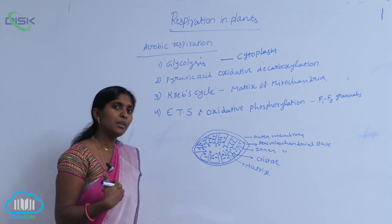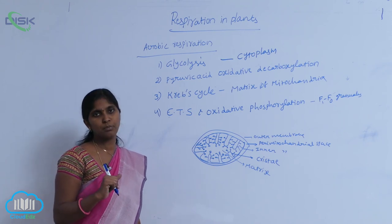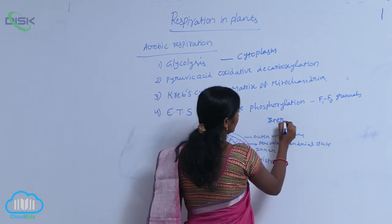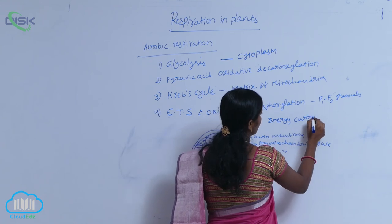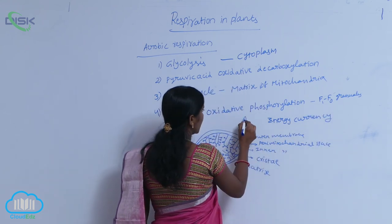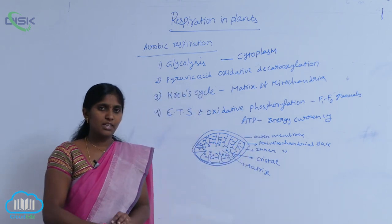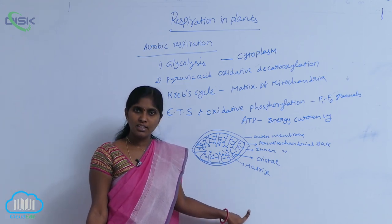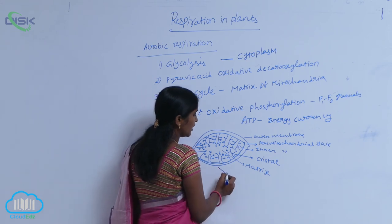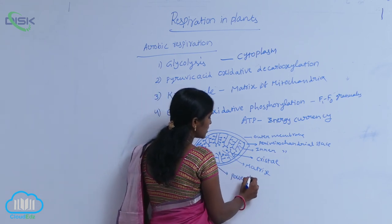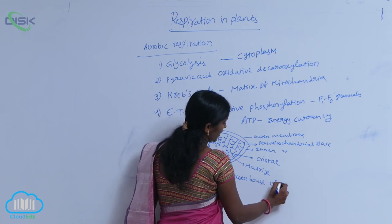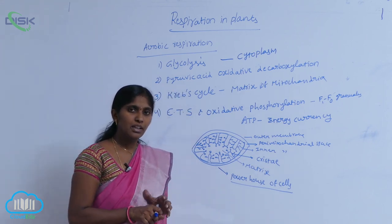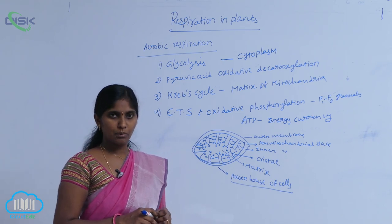ATP stands for adenosine triphosphate and is also called the energy currency. The energy is synthesized at the mitochondria, which is why mitochondria are considered the powerhouse of the cell. The synthesized ATP is utilized for all metabolic processes.